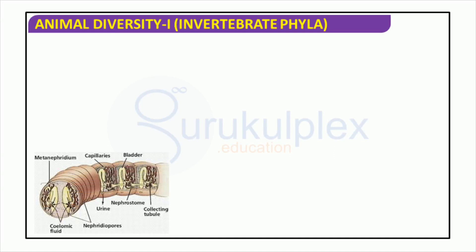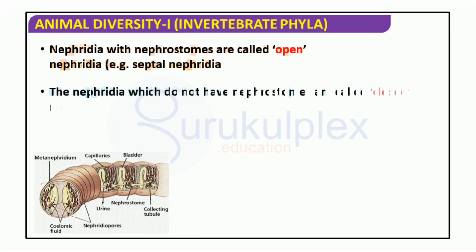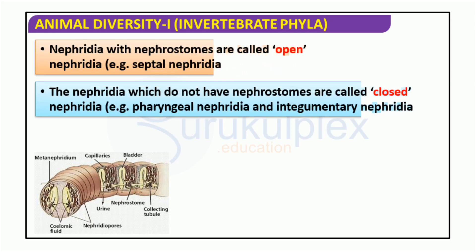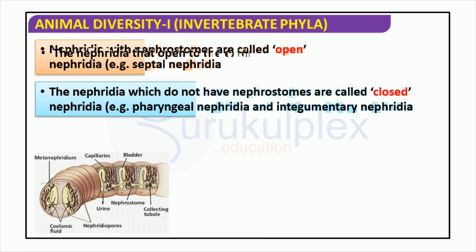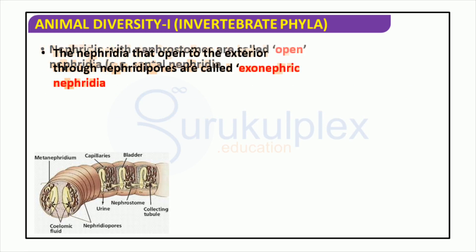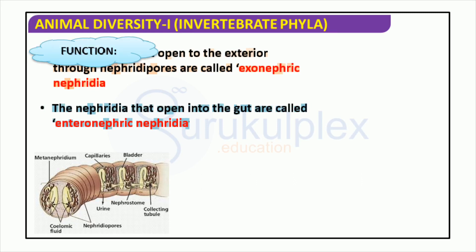Earthworms are remarkable creatures with essential functions for their environment. Of notable importance is their nephridia, divided into two main types: open and closed, further broken down into enteronephric and exonephric varieties. Open nephridia contain nephrostomes, while closed nephridia do not. Nephridia are responsible for expelling urea — the chief nitrogenous excretory waste — from the body. Furthermore, enteronephric nephridia have a role in managing osmoregulation and homeostasis of water. All in all, nephridia are paramount in the lives of earthworms, regulating their vital bodily functions.